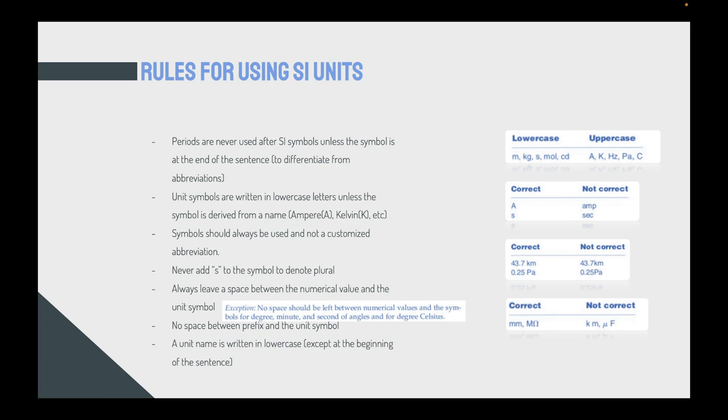Unit symbols are written in lowercase unless the symbol is derived from a name. We have some units honored for the name of the scientist who discovered them like ampere is capital A, Kelvin capital K, but the rest are in lowercase. When you say about the mass, kilograms, seconds, moles, all of that stuff. So you can see for uppercase we have ampere, Kelvin, Hertz because that's related to the scientist Hertz and Pascal for the scientist Pascal and so on.